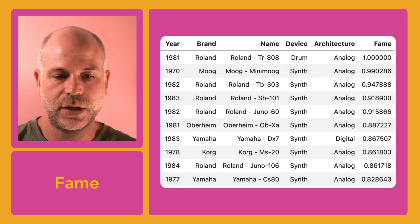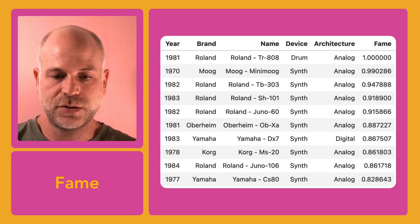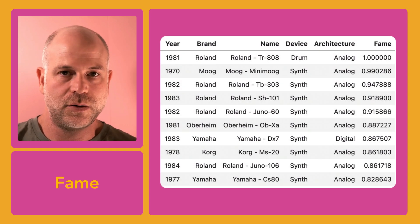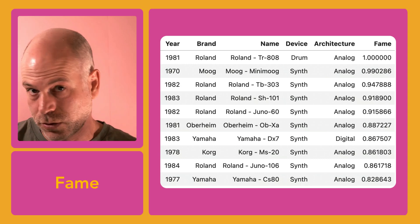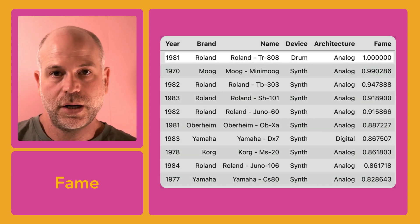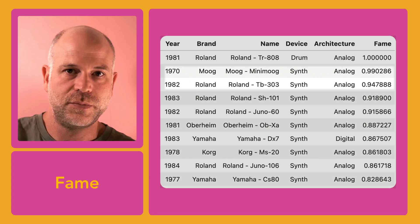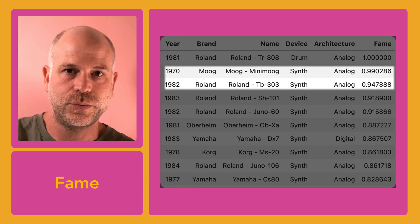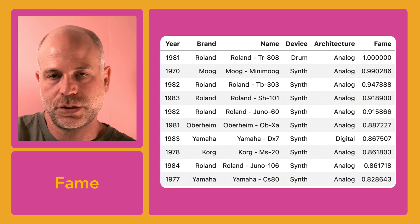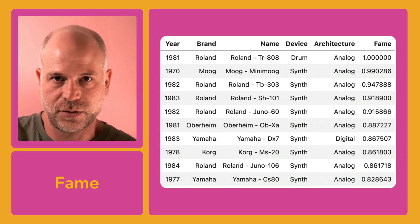Looking into the top 10, we can immediately see that the highest Fame score is dominated by analog synths from the 70s and the 80s, not surprising, with the TR-808 drum machine topping the list. This is followed by the original Minimoog and then the TB-303. If you've been in the music technology scene for a while, you might feel that this top 10 list is self-explanatory. And you might ask yourself, why do I need data science for this?